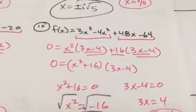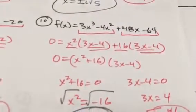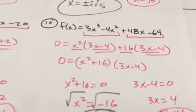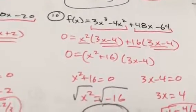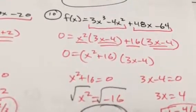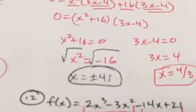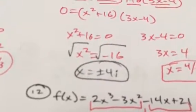Number 10: factor out x² leaving 3x - 4, and factor out 16 leaving 3x - 4. So (x² + 16)(3x - 4). Set x² + 16 = 0 to get x² = -16. When you take the square root of a negative, you get i.